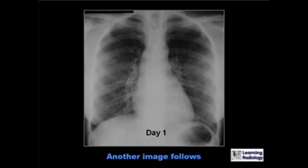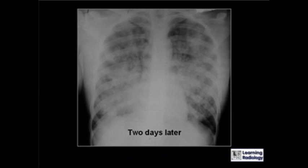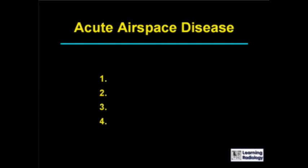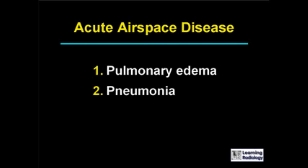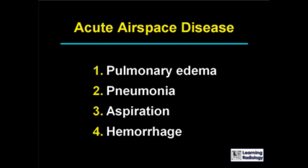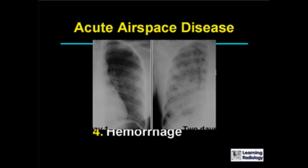This is the second differential: acute airspace disease. There are four causes. The causes can be pulmonary edema, pneumonia, aspiration, or hemorrhage.